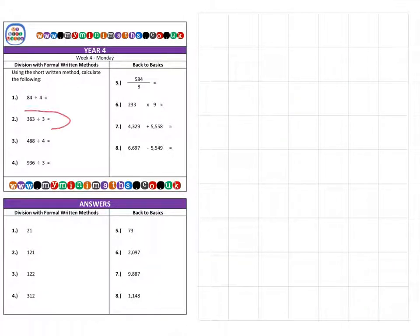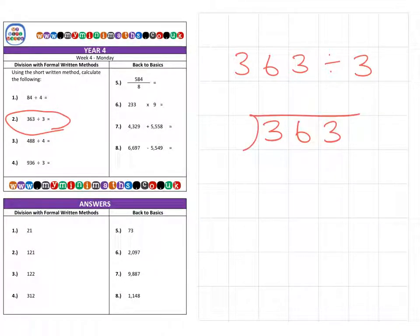Next we're onto question two, which is 363 divided by 3. It's like saying we've got 363 grapes and we're going to share that between three people. The calculation will tell us how many grapes each person will receive.